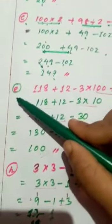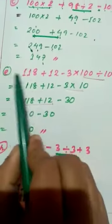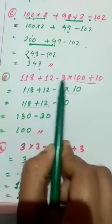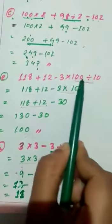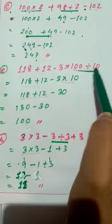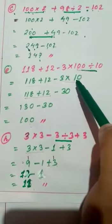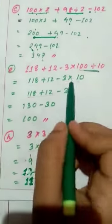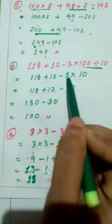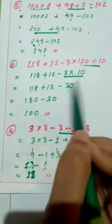The next question is (e): 118 plus 12 minus 3 into 100 divided by 10. We have to do the division work first: 100 divided by 10 means 10, as 10 into 10 gives 100. So it will be 10. Now we have to do the multiplication work: 3 into 10 equals 30.